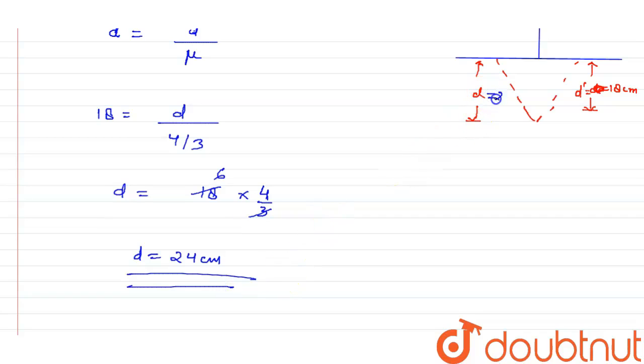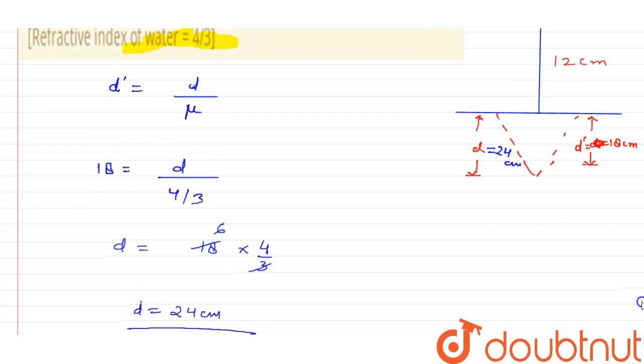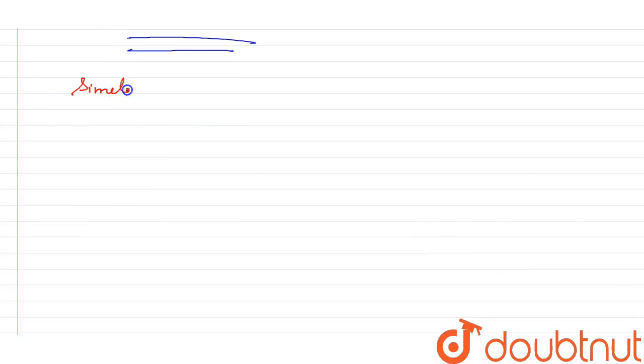Now the second thing is: what is the apparent height of the bird as seen by the fish? This is the same thing. Similarly, d' will become d divided by the refractive index μ, which equals 4/3.